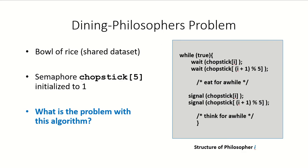If we look at this dining philosophers problem in terms of the system, the bowl of rice in the center is the shared data set which is accessible by all the philosophers, and these philosophers are the processes. Accessing this shared data set means entry into the critical section. The resources are the chopsticks which are being used to access this shared data set.